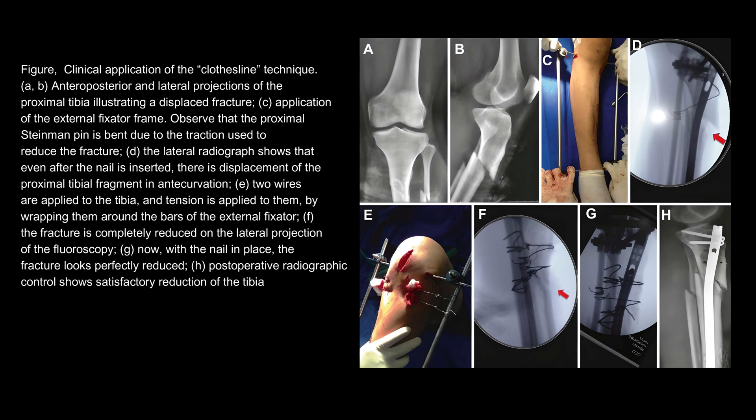Clinical application of the clothesline technique. (A, B) Anteroposterior and lateral projections of the proximal tibia illustrating a displaced fracture. (C) Application of the external fixator frame; note that the proximal Steinmann pin is bent due to the traction used to reduce the fracture. (D) The lateral radiograph shows displacement of the proximal tibial fragment in anticurvatum even after the nail is inserted. (E) Two cerclage wires are applied to the tibia and tension is applied by wrapping them around the bars of the external fixator. (F) The fracture is completely reduced on the lateral fluoroscopic projection. (G) With the nail in place, the fracture looks perfectly reduced. (H) Postoperative radiographic control shows satisfactory reduction of the tibia.